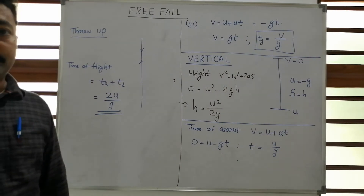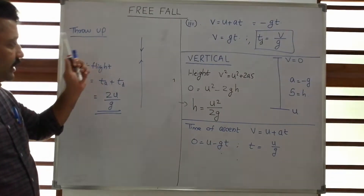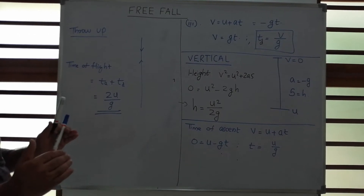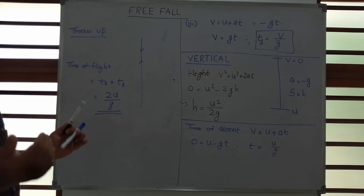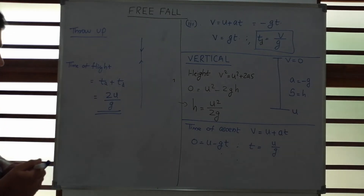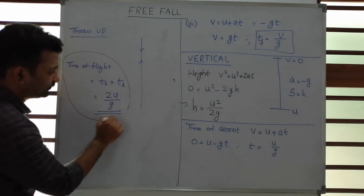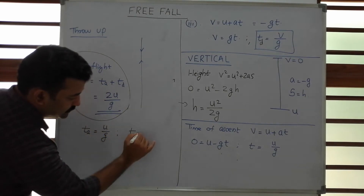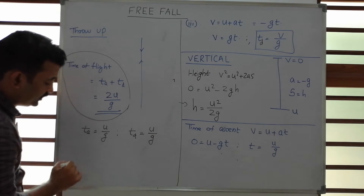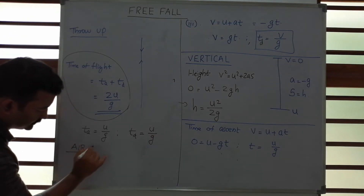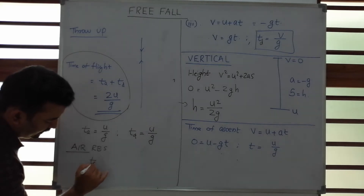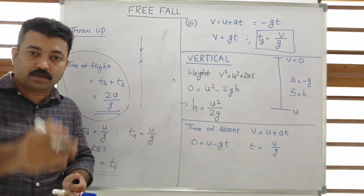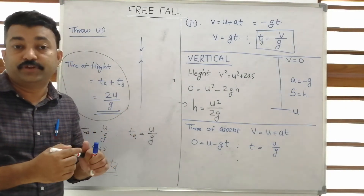We have discussed everything for this particle assuming the air is uniform and not producing any resistance. In this case, time of flight = 2u/g, time of ascent = u/g, and time of descent = u/g. When there is no air resistance, time of ascent equals time of descent.